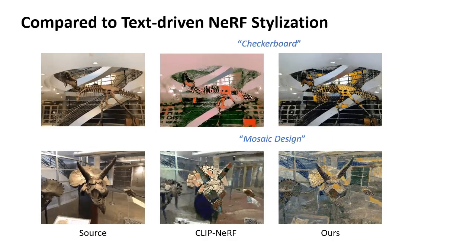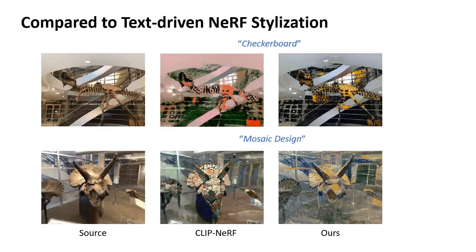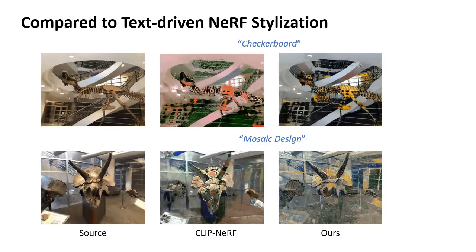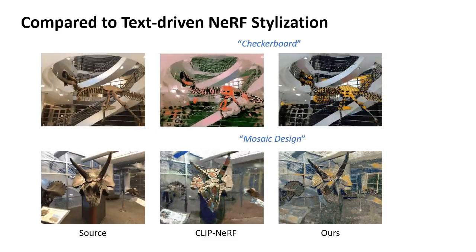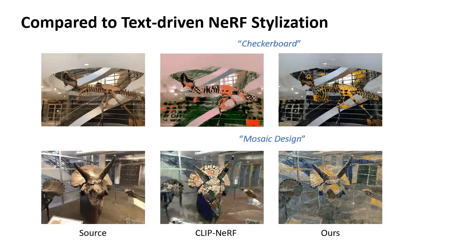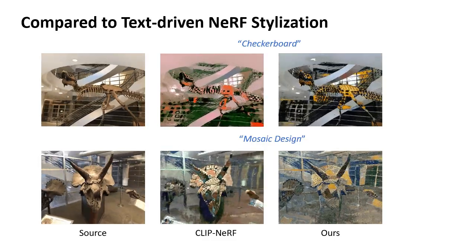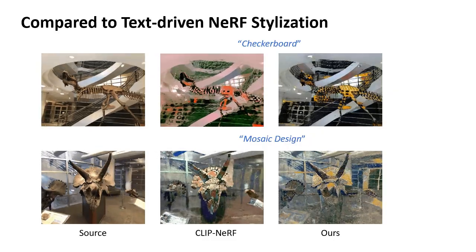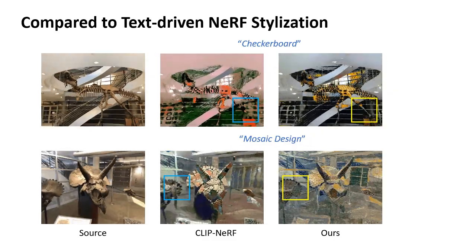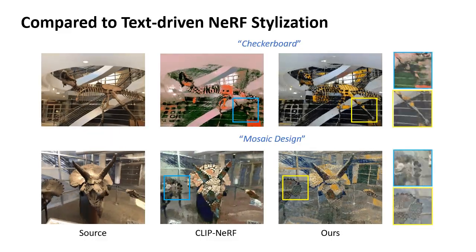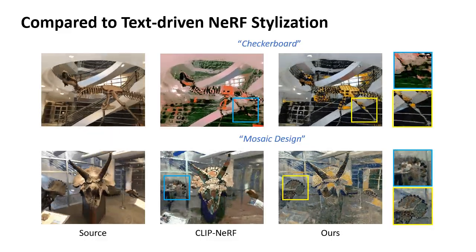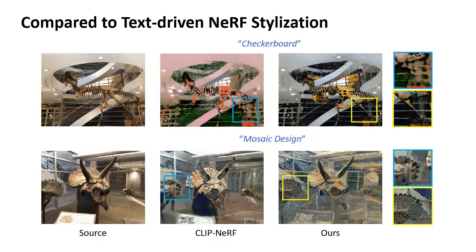Clip Nerf stylizes Nerf using the absolute directional loss, which does not put enough stylization. In contrast, we design a global-local contrastive learning strategy to ensure the desired style strength. Moreover, results of Clip Nerf may appear as severe geometry noises. In contrast, our weight regularization suppresses geometric noises by encouraging a more concentrated density distribution.